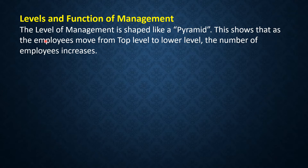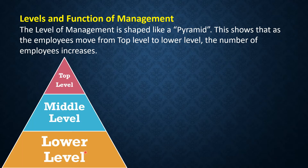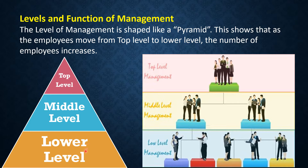The pyramid shape shows that as employees move from top level to lower level, the number of employees increases. Generally, the number of levels of management is determined based on the size of the business, number of employees, technical component, and nature of the business. Edward Francis Leopold Breach, in his book 'Principles and Practice of Management,' classified the levels of management into three categories: top level management, middle level management, and lower level management.